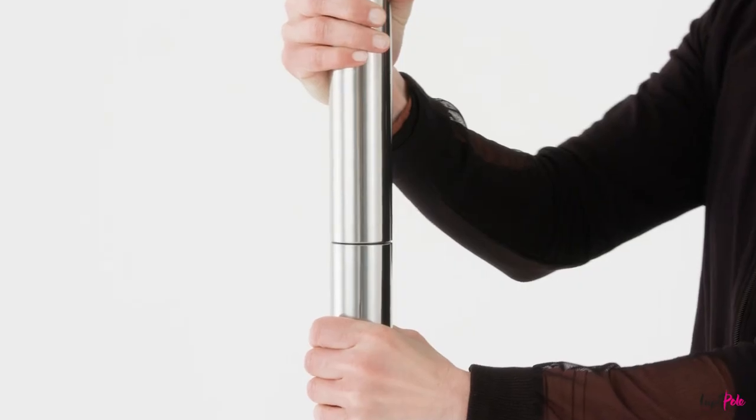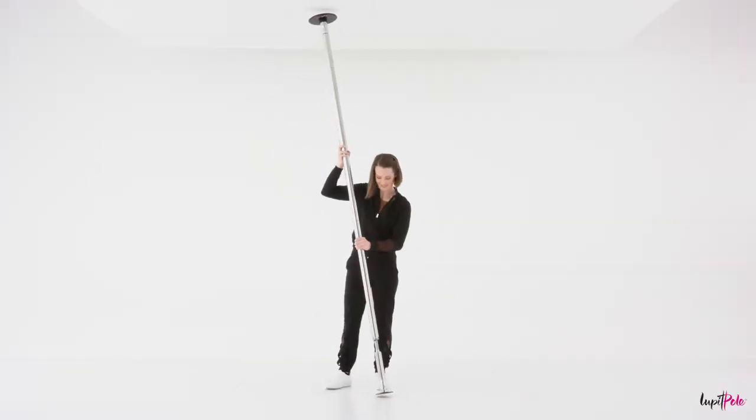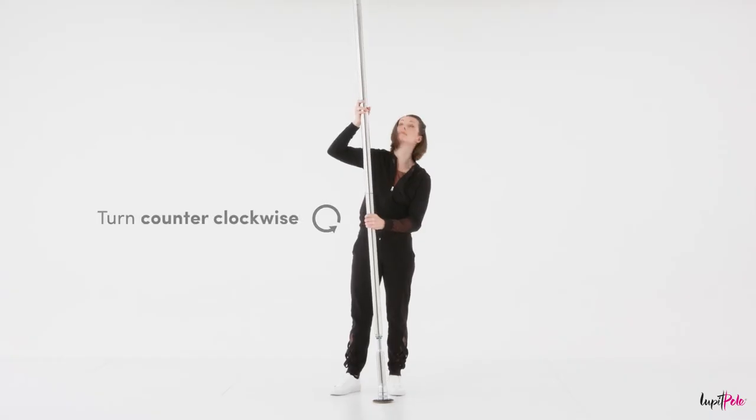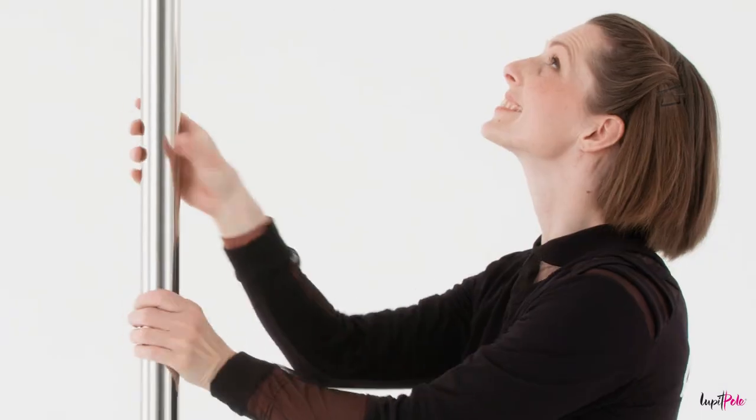Connect the parts by turning them slightly to the left and right. Make sure there are no gaps between each piece. Align the pole with the ceiling. Turn counterclockwise to extend it until the upper disc is tight to the ceiling.